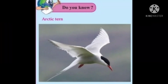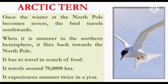Do you know? The Arctic tern: Once the winter at the North Pole becomes severe, this bird travels southward. When it is summer in the Northern Hemisphere, it flies back toward the North Pole in search of food. In the course of one year, it travels around 70,000 kilometers. It might be the only species in the world that experiences summer twice in a year.